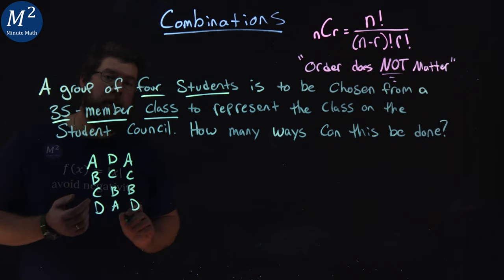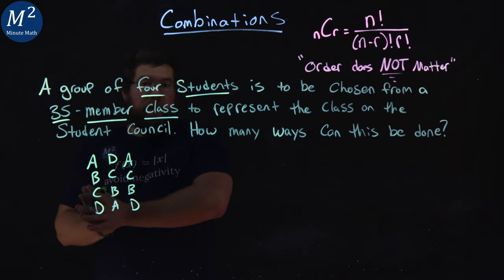So student A, B, C, D, if they were selected, that is the same group of four students as D, C, B, A, or A, C, B, D. There's many different ways we can order these groups of four students, A, B, C, D, that is still the same group of four who are going to be on the student council.